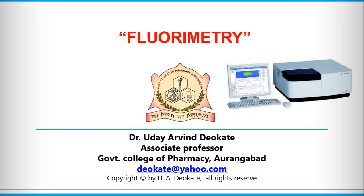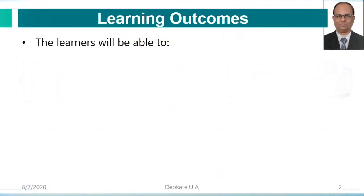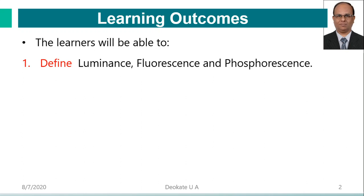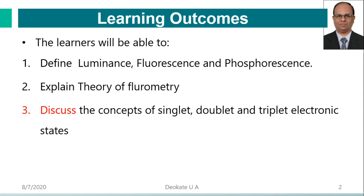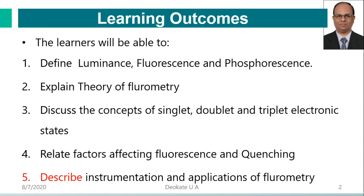Hello friends, we will start with the next topic, which is fluorometry. In fluorometry, the learner will be able to define luminescence, fluorescence, and phosphorescence. The learner will be able to explain the theory of fluorometry, discuss the concept of singlet, doublet, and triplet electronic states, relate factors affecting fluorescence and quenching, and describe instrumentation and application of fluorometry.